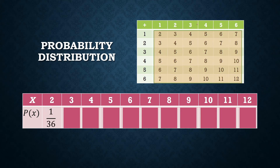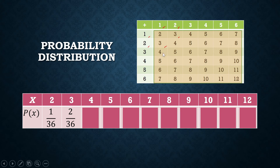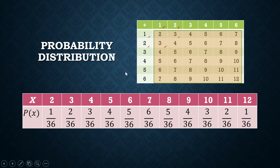For a sum of 3, it can appear in two ways: the first die shows 2 and the second shows 1, or vice versa. So the probability is 2 over 36. For a sum of 4, counting the combinations gives 3 ways, so it's 3 over 36. We continue this process for each outcome until we reach 12, which can only occur one way — when both dice show 6. So 12 has a probability of 1 over 36.